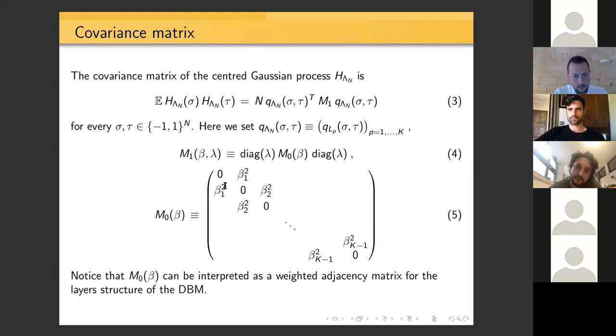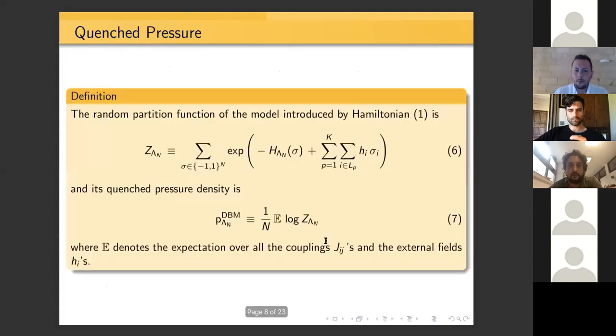The main characteristic of this matrix is that it's tridiagonal, and this is exactly the reason why we can solve, we can say something about the annealed and the replica symmetric regime. If you think in the case of K=2, which corresponds to the bipartite case, you simply have to look at this little minor here, and this corresponds to the bipartite case.